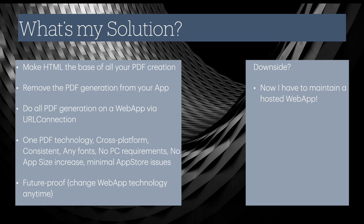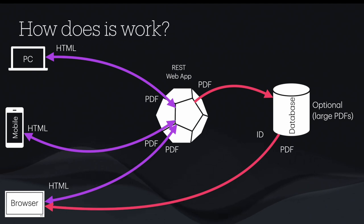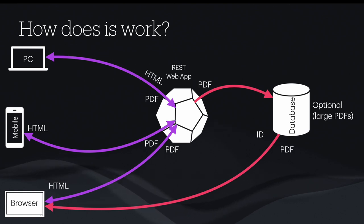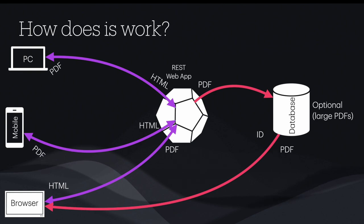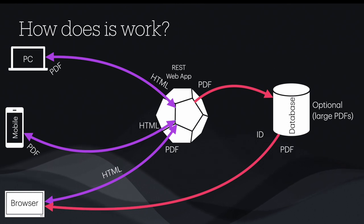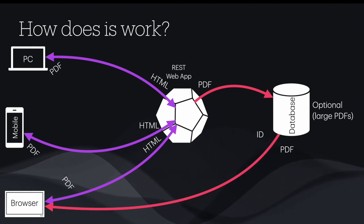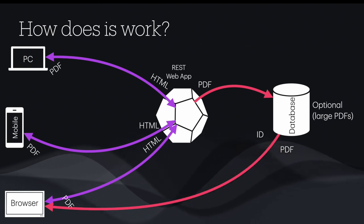So how does it work? You generate your HTML on your PC, send it off to the web app, and it sends back your PDF. Even on mobile, it uses exactly the same technique — send it off to the REST web server and it returns a PDF. On a browser, exactly the same: send HTML to the web app, web app talks to web app, and you get back exactly the same PDF from exactly the same HTML. It'll work with multiple different apps — the box in the middle doesn't care what your application is; all it's doing is converting HTML to PDF and returning it.